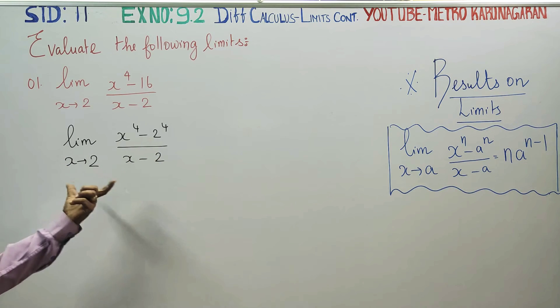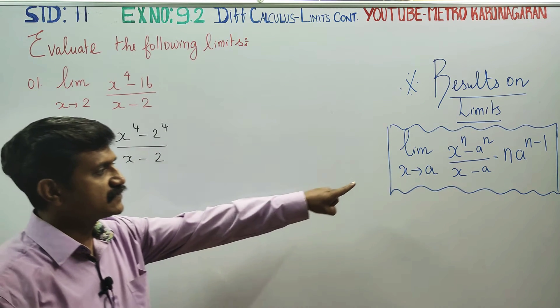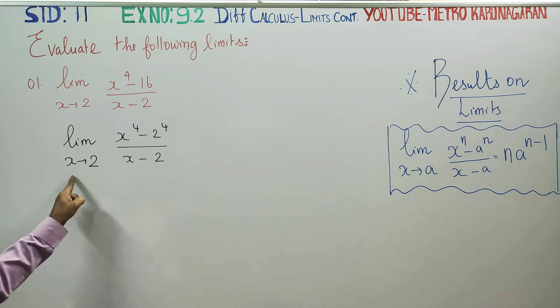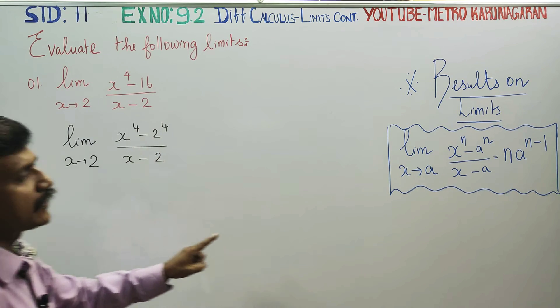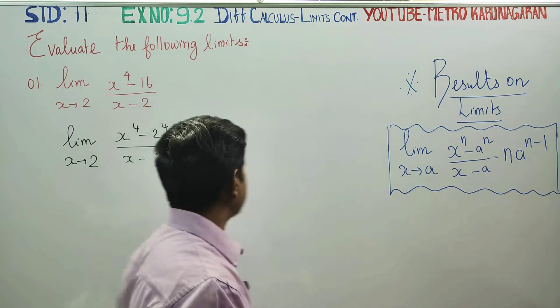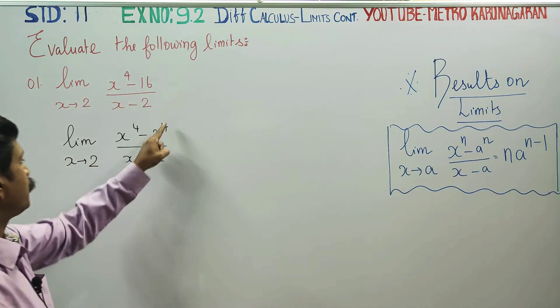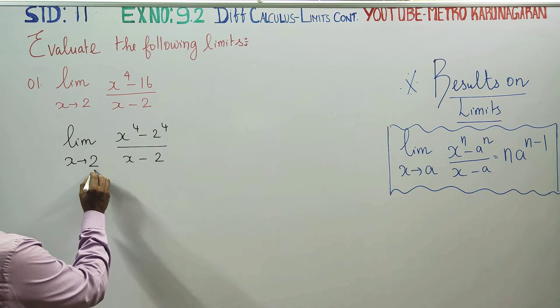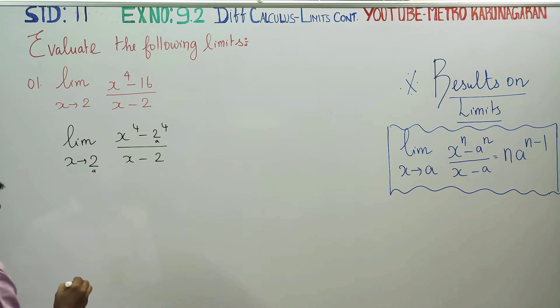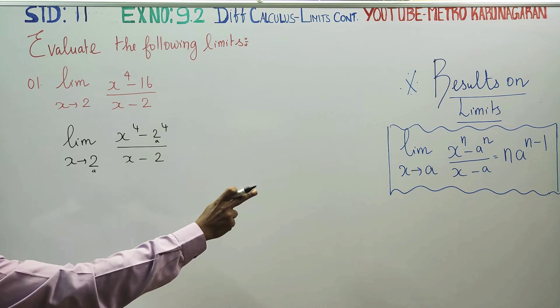The same limiting case matches with this formula: x tends to a, x to the power n, x to the power 4 minus a to the power n, 2 to the power 4. Here a is a value, by x minus a, x minus 2.